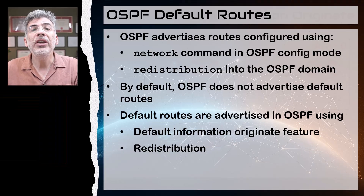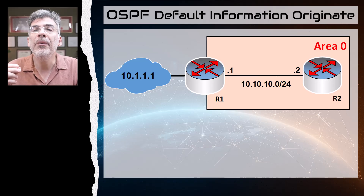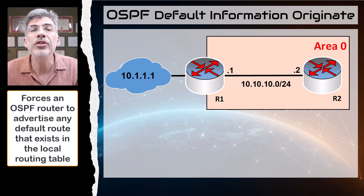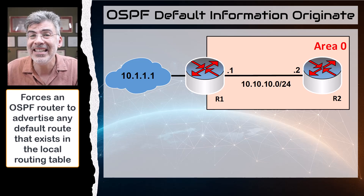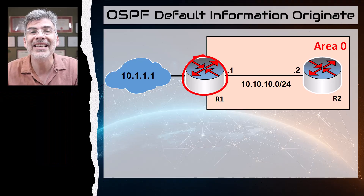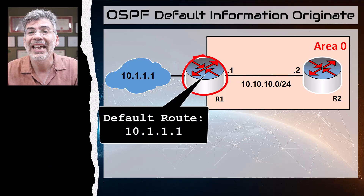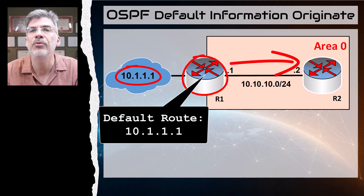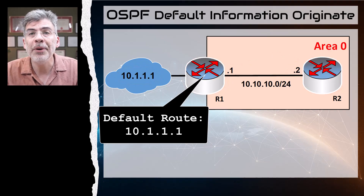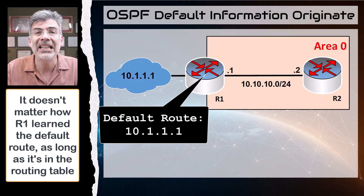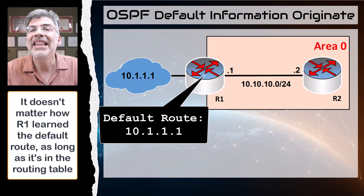Here's the topology we'll be using to apply the default-information originate feature. This feature is used to force OSPF to advertise any existing default route in the local routing table. So if R1 has a default route to the 10.1.1.1 next hop, we can use this feature to make R1 advertise that route to other OSPF neighbors such as R2. R1 has learned about this default route either from another routing protocol or a statically configured route.